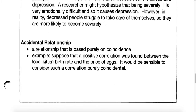An accidental relationship is kind of funny. Sometimes we plot two variables on a graph — something on the x-axis and something on the y-axis — but they're not actually related at all. Yet we have a really strong correlation and all the points are lining up really nicely, but it's purely accidental. For example, suppose a positive correlation was found between a local kitten birth rate and the price of eggs. It would look like the more kittens being born, the higher the price of eggs at the store — purely coincidental.